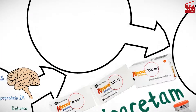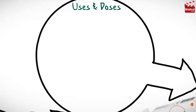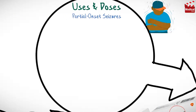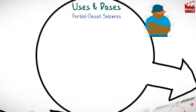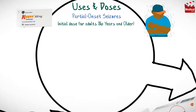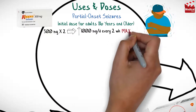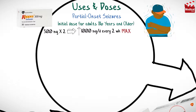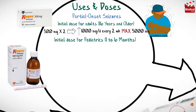Levetiracetam is used in the treatment of partial onset seizures. The usual initial dose for adults 16 years and older is 500 milligrams twice daily, then increased by 1000 milligrams per day every two weeks to a maximum recommended daily dose of 3000 milligrams.